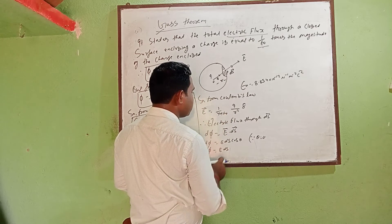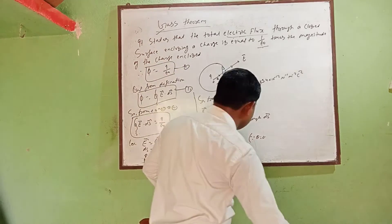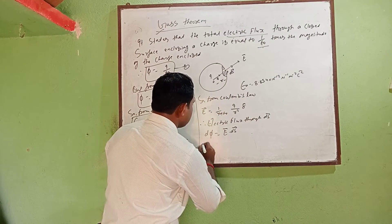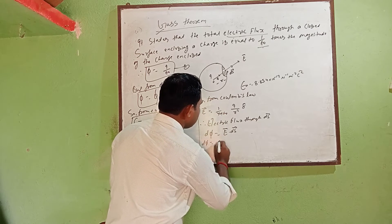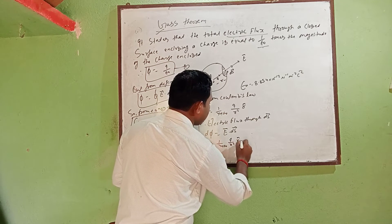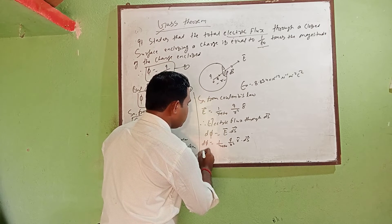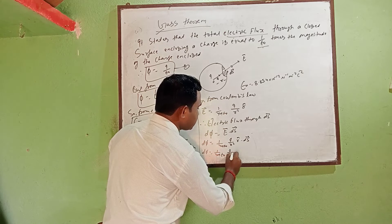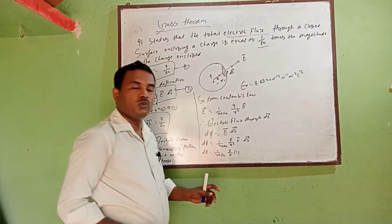Since theta equals 0 degrees, d phi equals E dS. Substituting the expression for E, we write d phi equal to 1 by 4 pi epsilon naught times Q by r square times r-hat times dS vector. Removing the vector sign, cos theta appears, and since theta is 0, we substitute cos 0 degree.